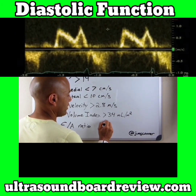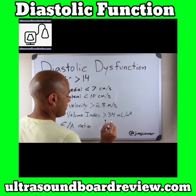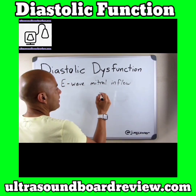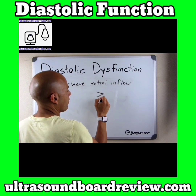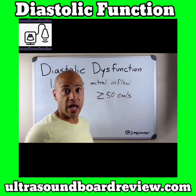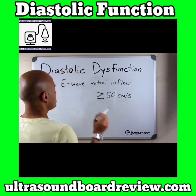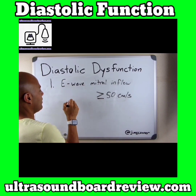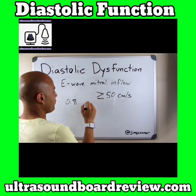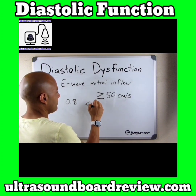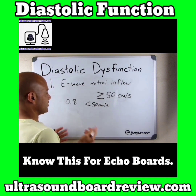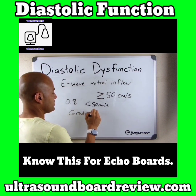You measure the E wave and the A wave. When you obtain your E to A ratio, pay attention to the E wave mitral inflow — anything greater than or equal to 50 centimeters per second is considered abnormal. So if you get an E to A ratio of 0.8, but your inflow velocity is less than 50 centimeters per second, this is considered grade 1 diastolic dysfunction.